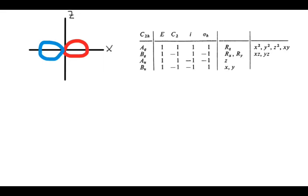If you perform the identity operation on this px orbital, that's like you picked it up and put it back down — the orbital stays the same. The red side is on the same side, the blue side is on the same side. So we're going to write down a 1 in the E column to show that the p orbital is symmetric with respect to the identity operation.